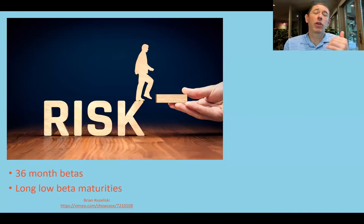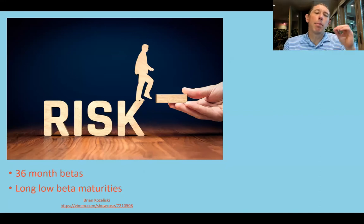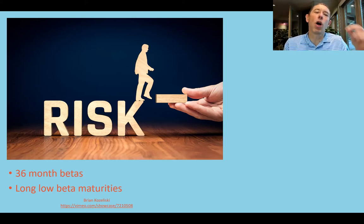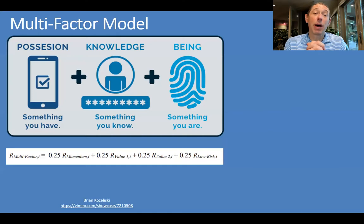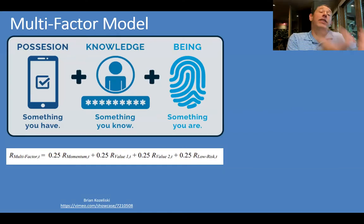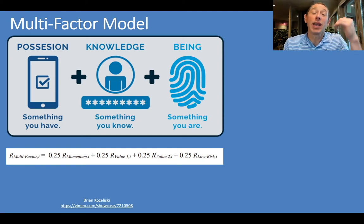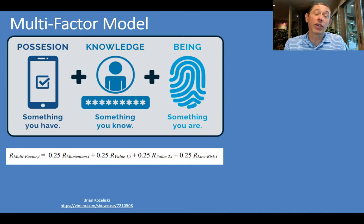In terms of risk, they're looking at 36-month betas on a maturity-level basis — going long the low-beta maturities and short the high-beta maturities. If you want to combine factors, which you often do in equity markets, they did the same thing here: equal-weighting each of the four factors — the momentum factor, the low-risk factor, and the two value factors — to come up with a multi-factor score.